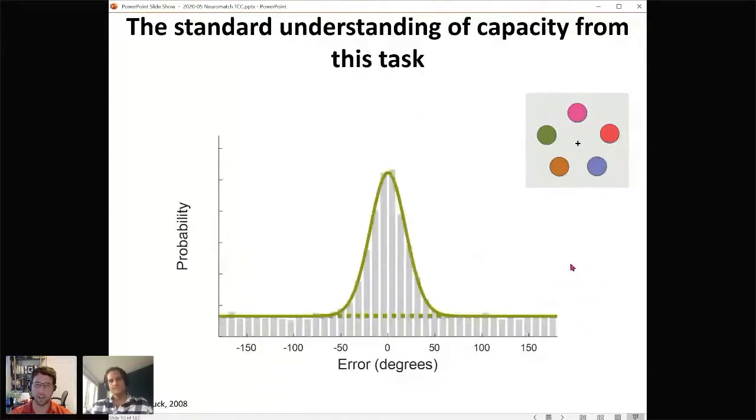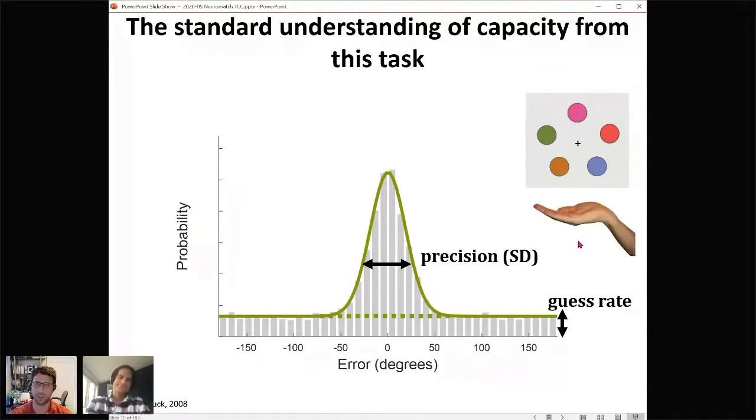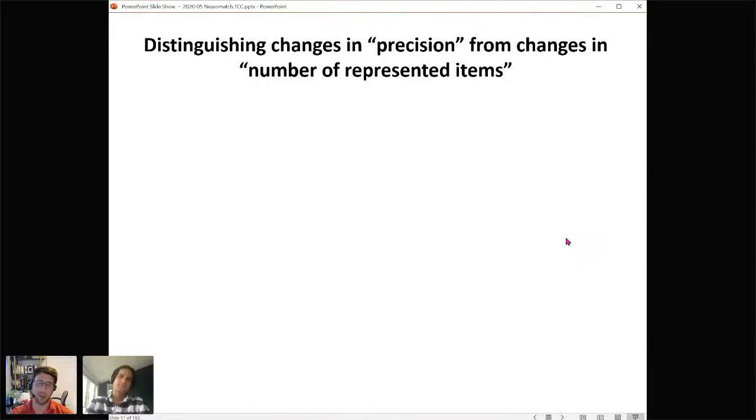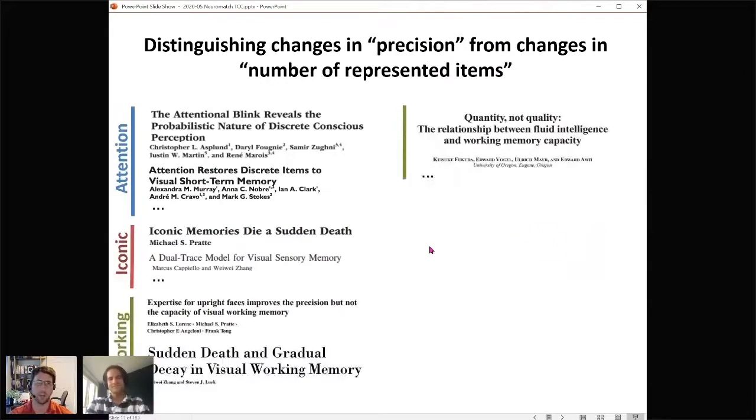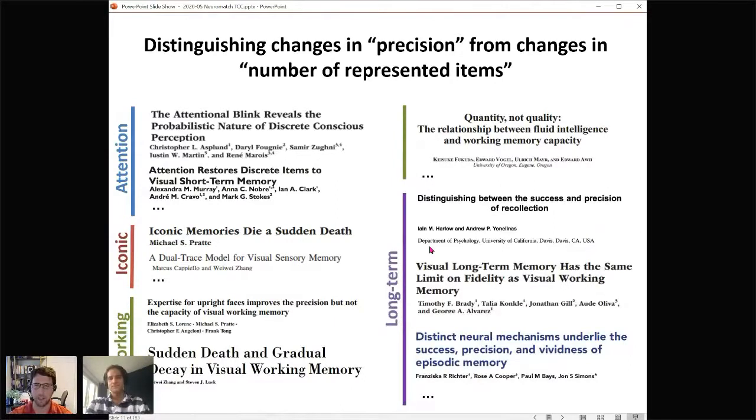A lot of people have argued that this is actually a two-component situation, that these are guesses, that this uniform distribution arises from people not knowing anything and clicking at a random spot on the wheel, and that these clustered responses near zero are remembered items that vary in precision. This is an incredibly prevalent view and it's really just a formalization of this holding in mind three items thing. This view is so prevalent there's hundreds of papers that argue that you can distinguish changes in precision from the number of represented items. People use this to argue that consciousness is discrete, that iconic memory, working memory, long-term memory, the relationship of working memory to intelligence, all of these areas rely on this exact model.